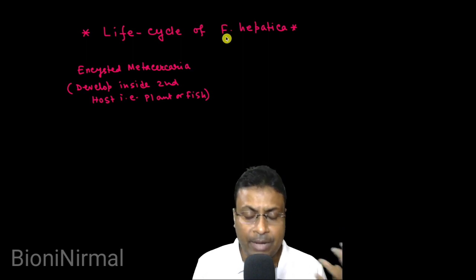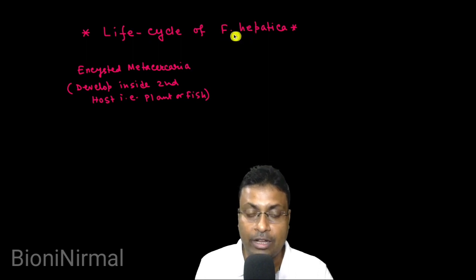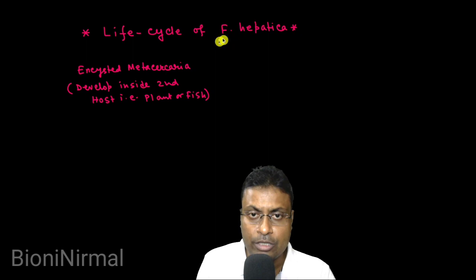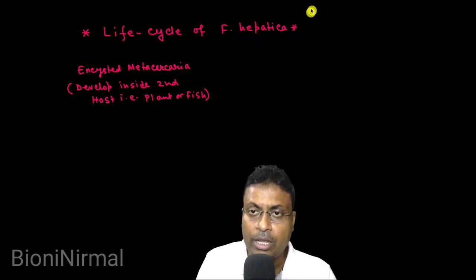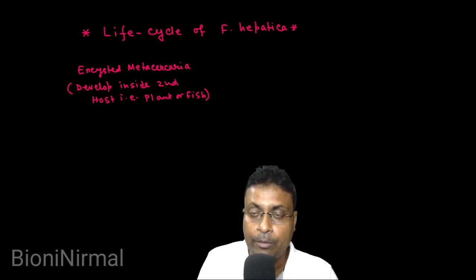In the second class, we will cover Fasciola Hepatica in its three morphological forms — the adult, egg, and larva. We will also cover the life cycle of Fasciola Hepatica. Fasciola Hepatica is called the liver fluke, and its class is Digenea.